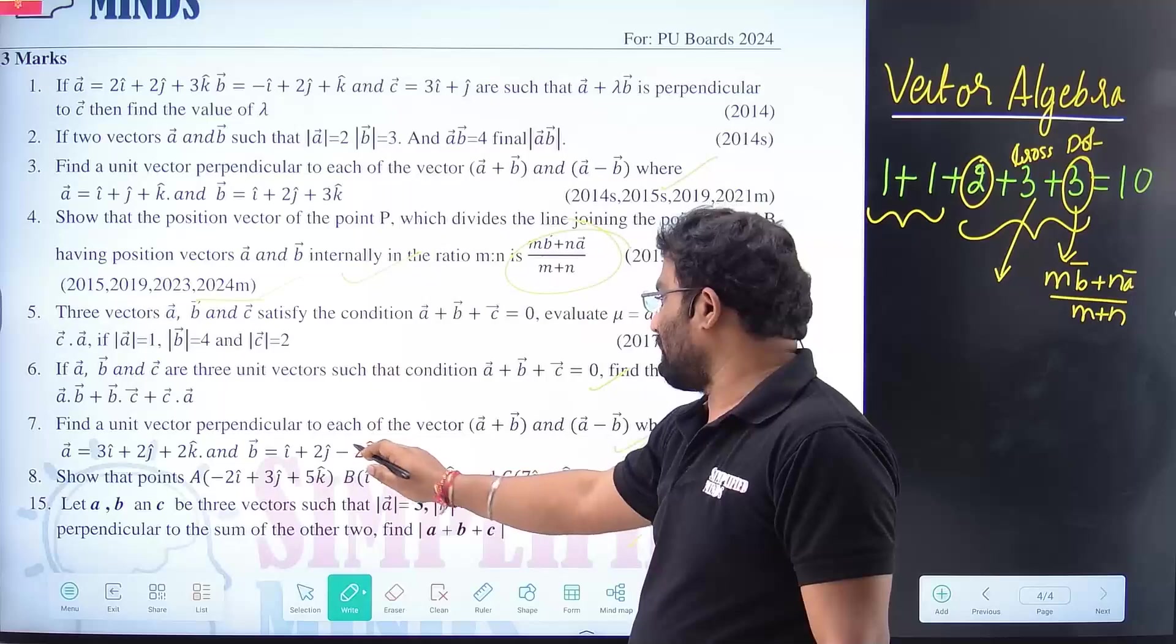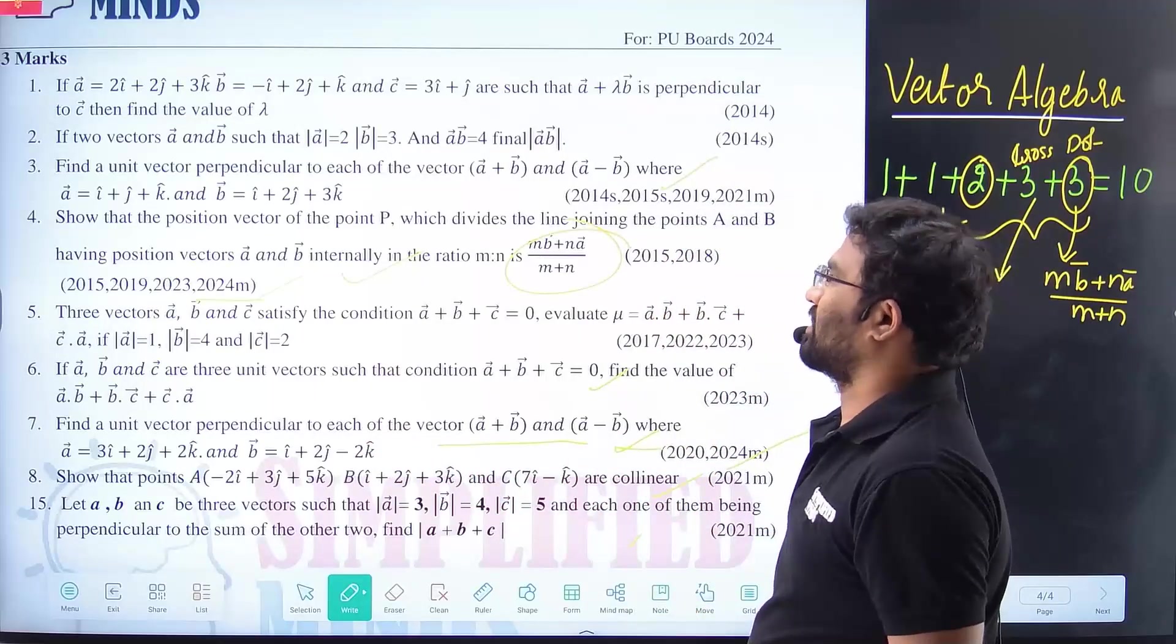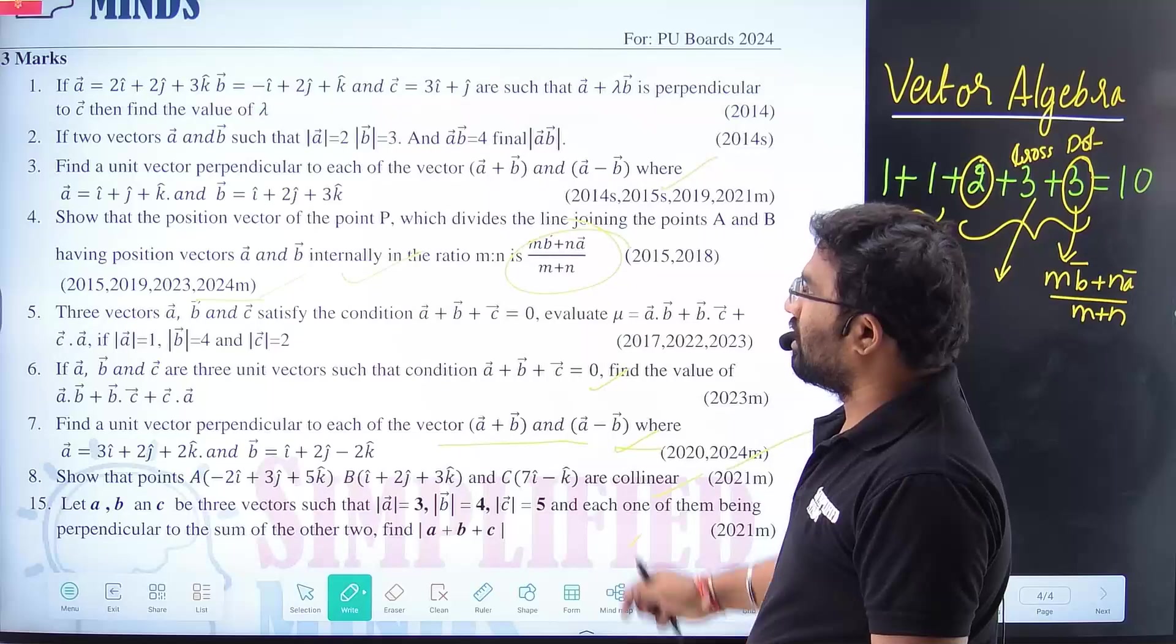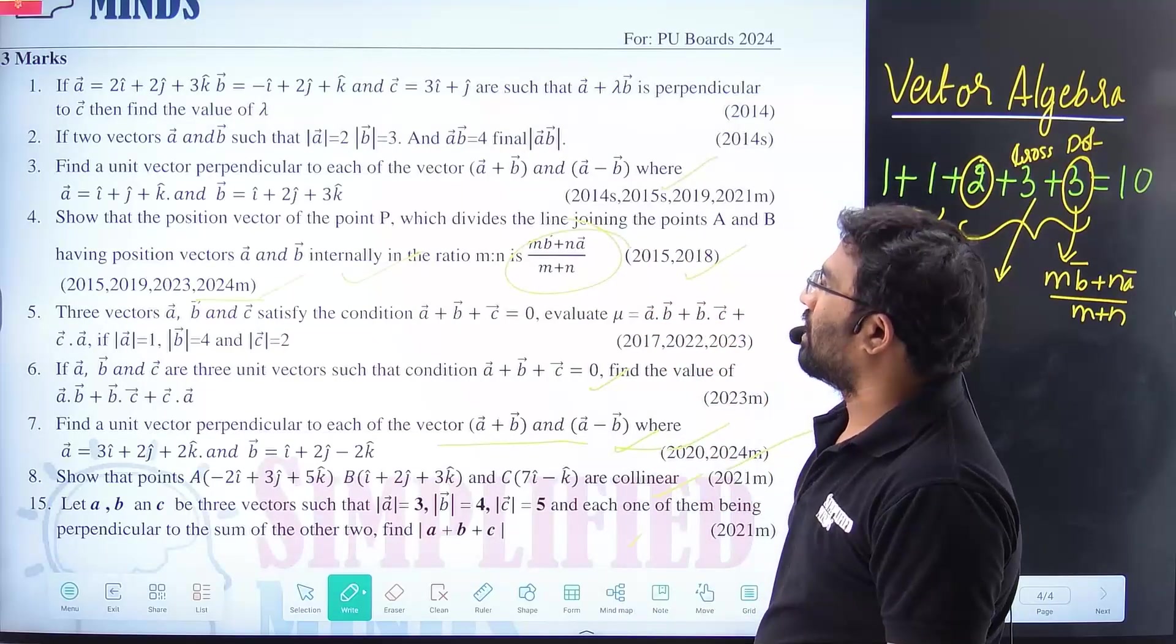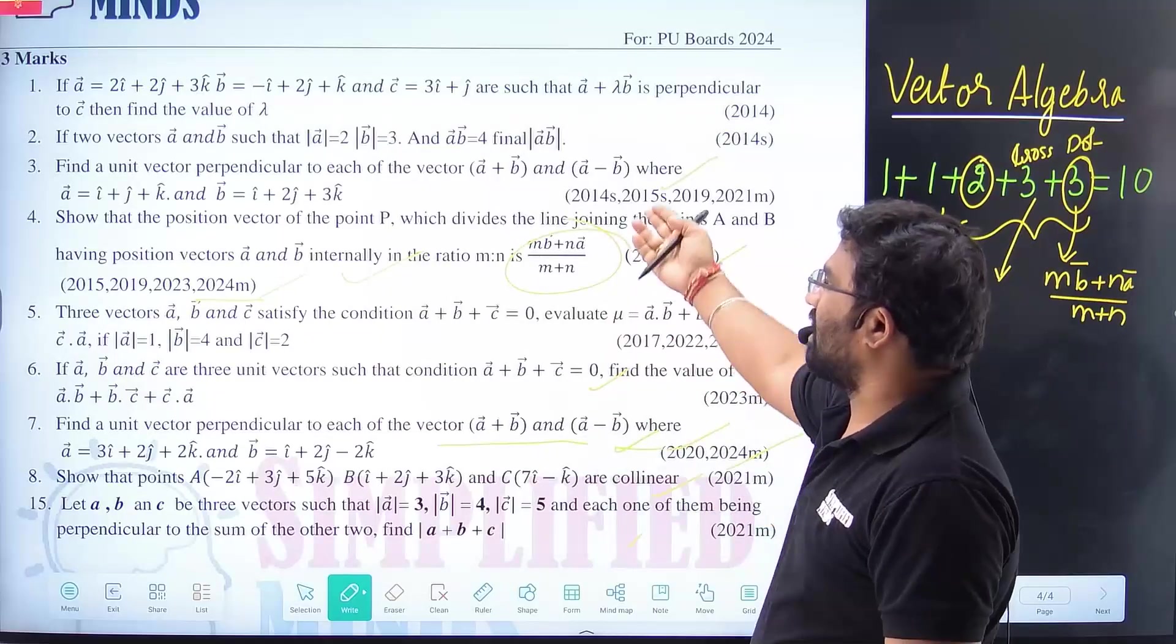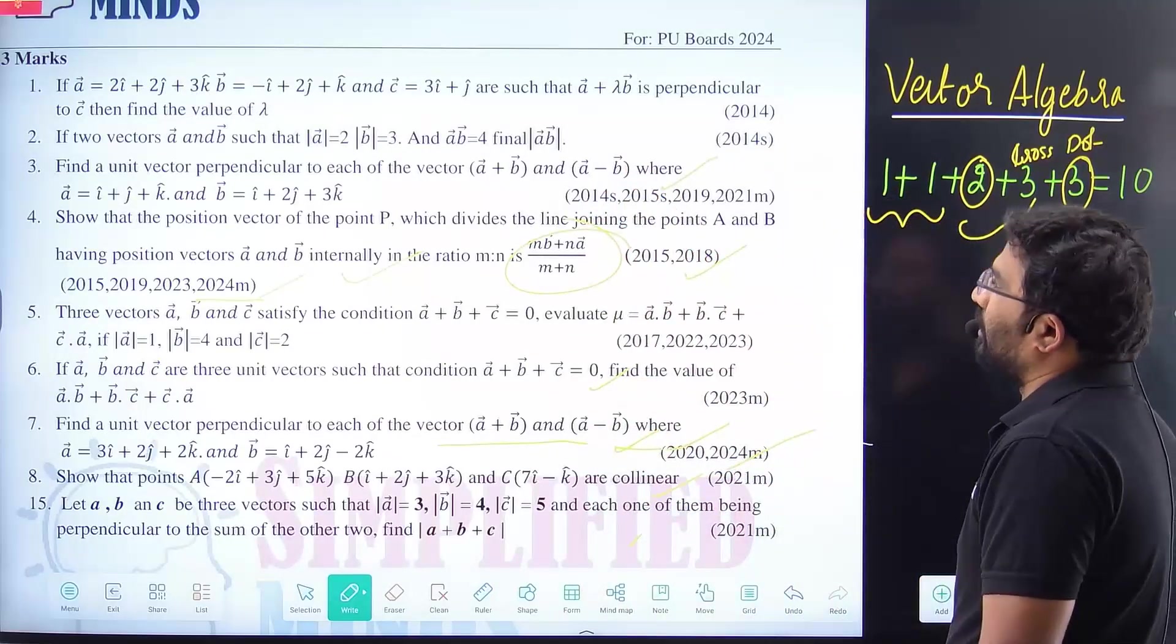Find a unit vector perpendicular to both the vectors. Ask in model paper. They will ask similar questions. That's right. So. Three markers. One. Dot. Cross. Find a unit vector perpendicular each of the vectors. Again. Same question. That. Same question. Angle find. That's right. Two markers.